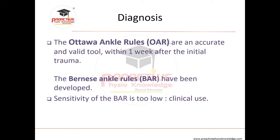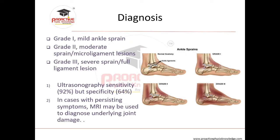For diagnosis, the Ottawa Ankle Rules have accurate value within one week after initial trauma. Athletes may be seen immediately after injury, so Ottawa Ankle Rules can be applied directly. Clinicians in private practice often see patients two to three weeks later. If swelling, pain, or deformity is found, refer to healthcare professionals. The Bernese ankle rules have been developed with low sensitivity but can be used in clinical practice.